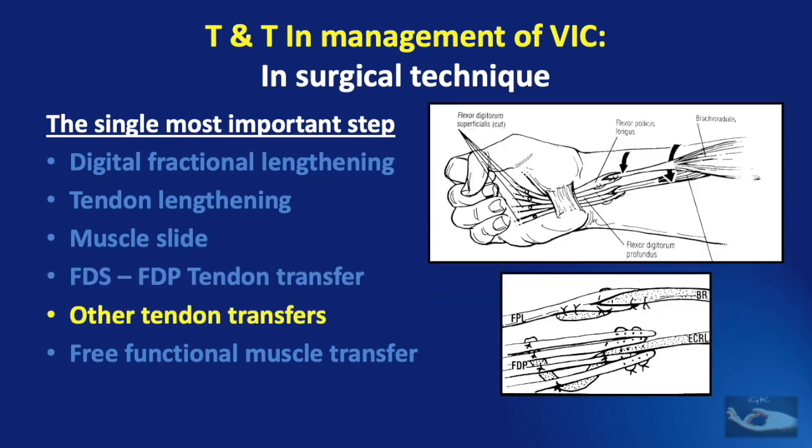When the extensor muscles are intact, the extensor tendons can be transferred to the flexor side. The commonest procedure done is the transfer of the extensor carpi radialis longus to the flexor digitorum profundus and the transfer of the brachioradialis to the flexor pollicis longus. It is important to remember when doing this transfer that a Pulvertaft weave is ideal, so that we have a strong repair which can work well.